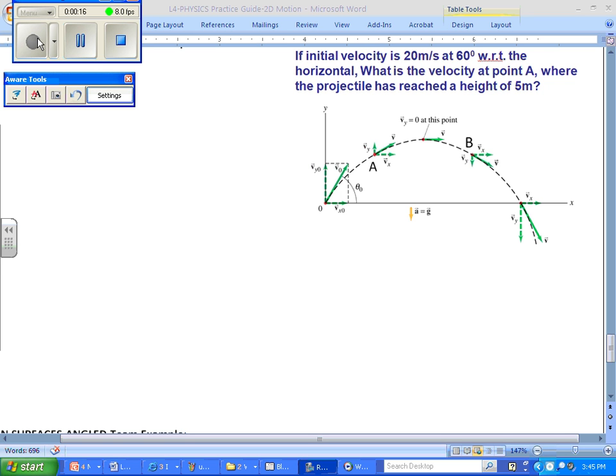We'll take an initial velocity, in this case 20 meters per second. Now some of that 20 meters per second is going forward, we call that the x component, vx, and some is going upwards, we call that the y component, or v sub y.